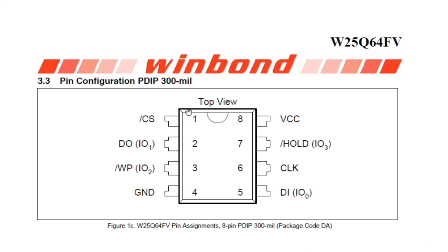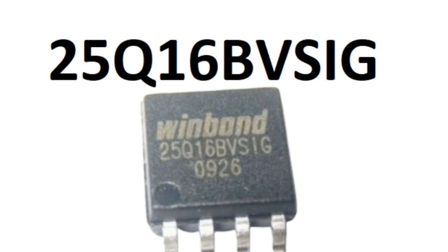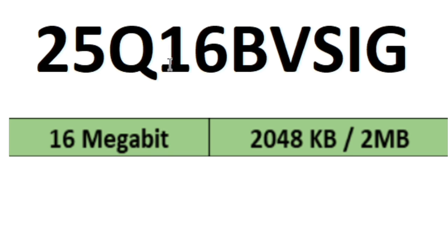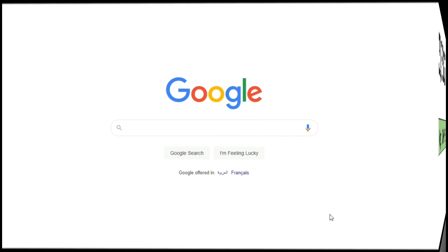Here we have an 8-pin BIOS chip. First, I'll show you how to download the datasheet for any BIOS chip. Let's assume we have a BIOS chip with reference 25Q16BVSIG. The number 16 here indicates the size — 16 megabit, which equals 2 megabytes.